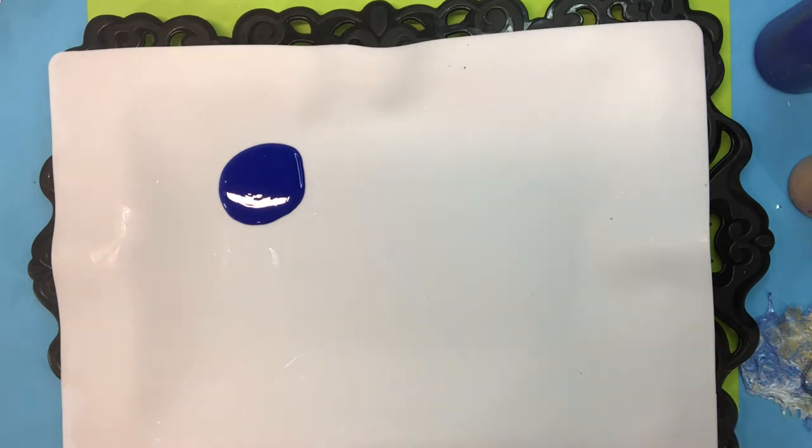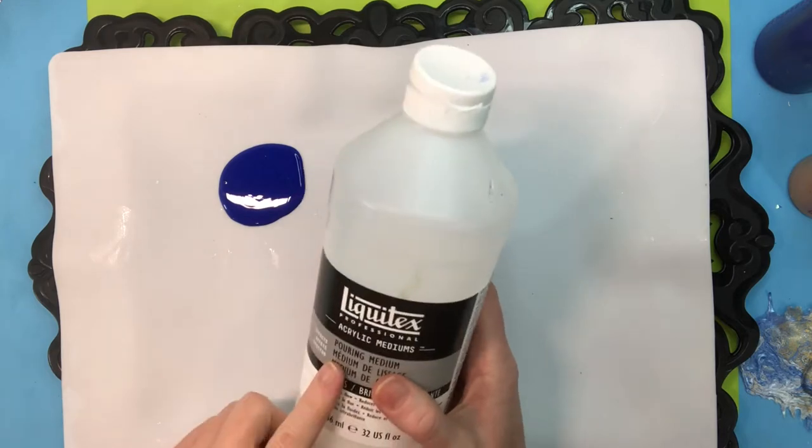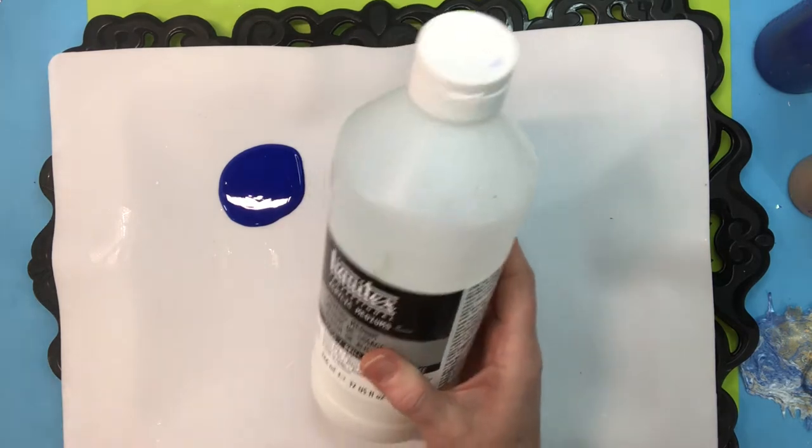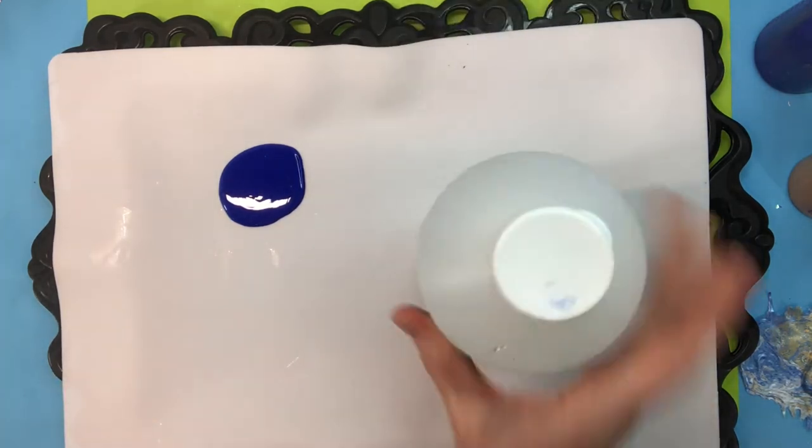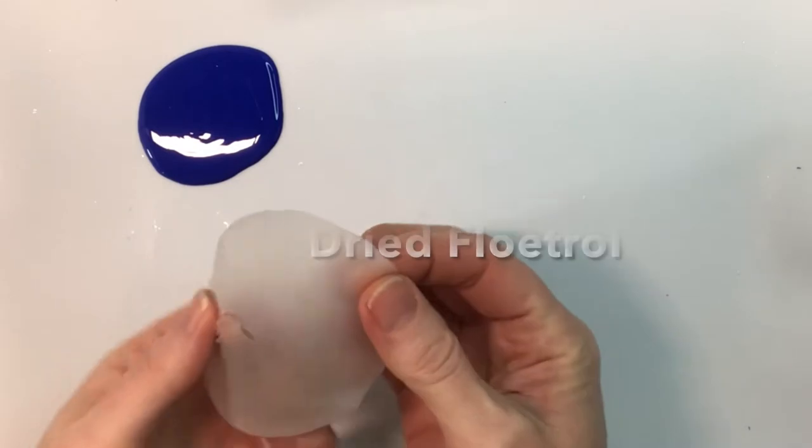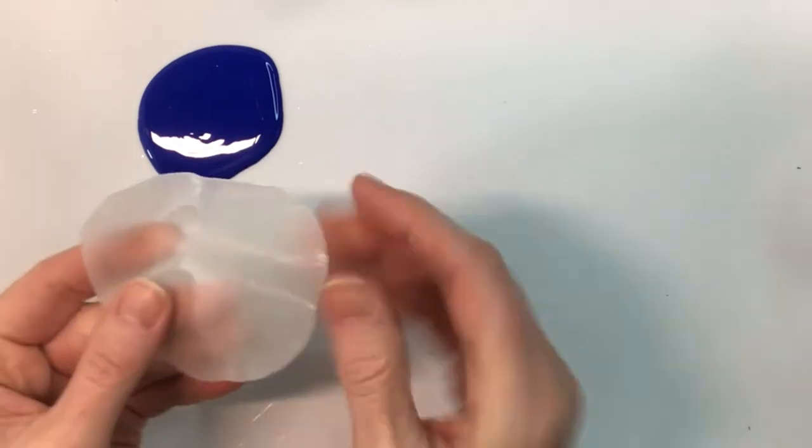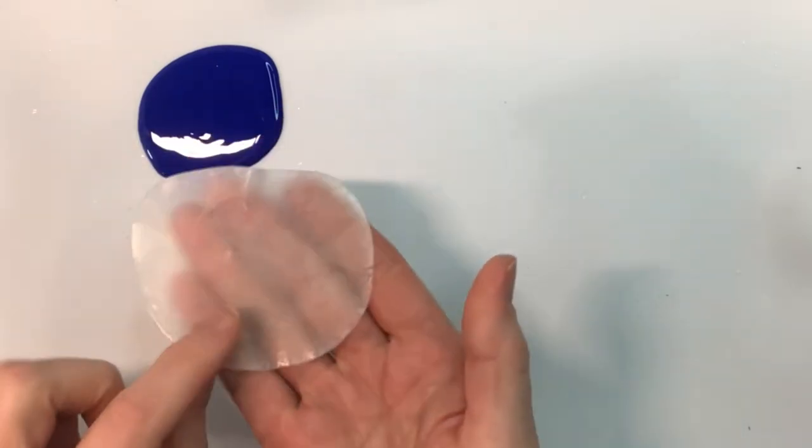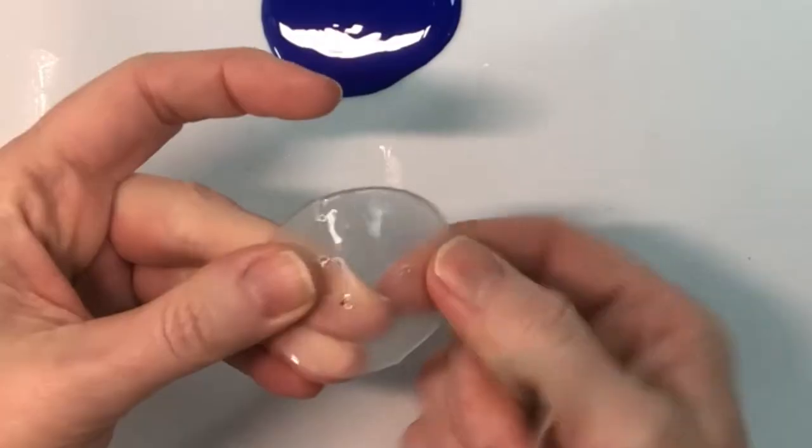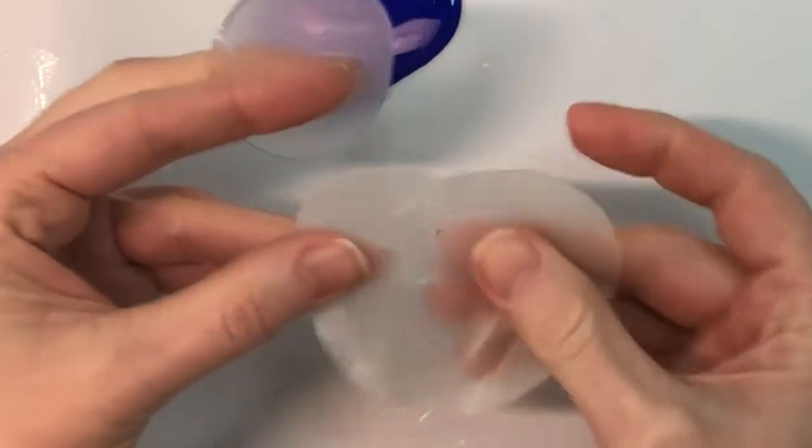And that is to use Liquitex pouring medium. It's probably the best one and let me tell you why I use the Liquitex pouring medium. I do usually use Floetrol when I pour paint. This is actually dried Floetrol. Dried Floetrol is semi-clear, semi-transparent, but it tends to be kind of brittle and that's what it looks like when it dries. It takes a really long time to dry. In comparison to something like Liquitex, which has a lot more strength to it and it dries usually a lot clearer.